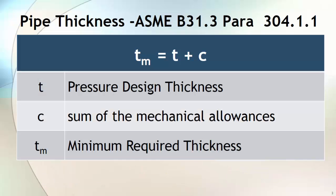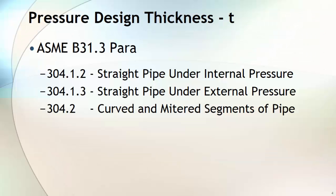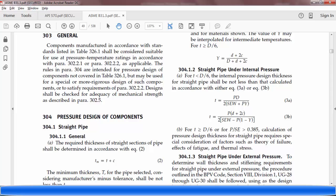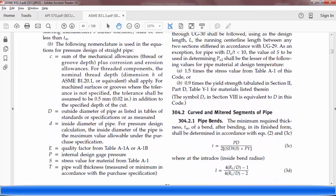This is the equation for minimum required thickness as given in ASME B31.3. I will show you later in this video paragraph 304.1. In this equation, the minimum required thickness is the sum of pressure design thickness plus the sum of all mechanical allowances. Mechanical allowances cover corrosion allowance, erosion allowance, and any other mechanical allowances. You can calculate your pressure design thickness as given in ASME B31.3 section 304, which provides equations for straight pipe under internal pressure, under external pressure, as well as the minimum required thickness for elbow and mitre segments of the pipe.